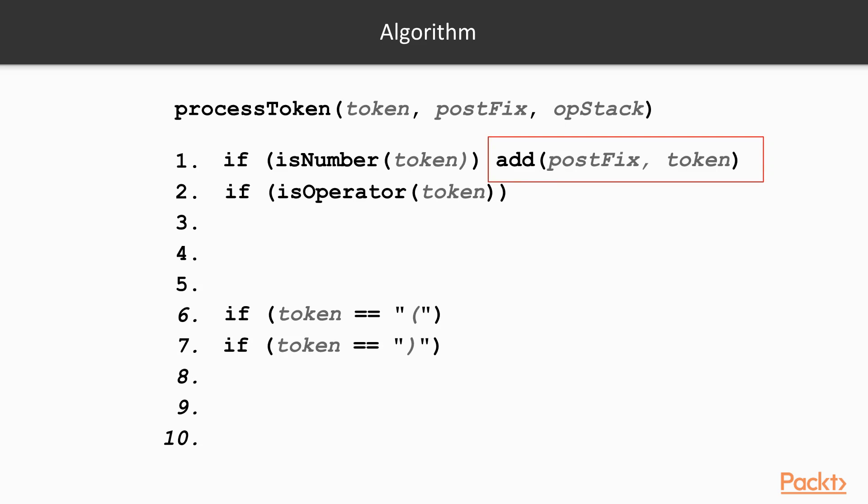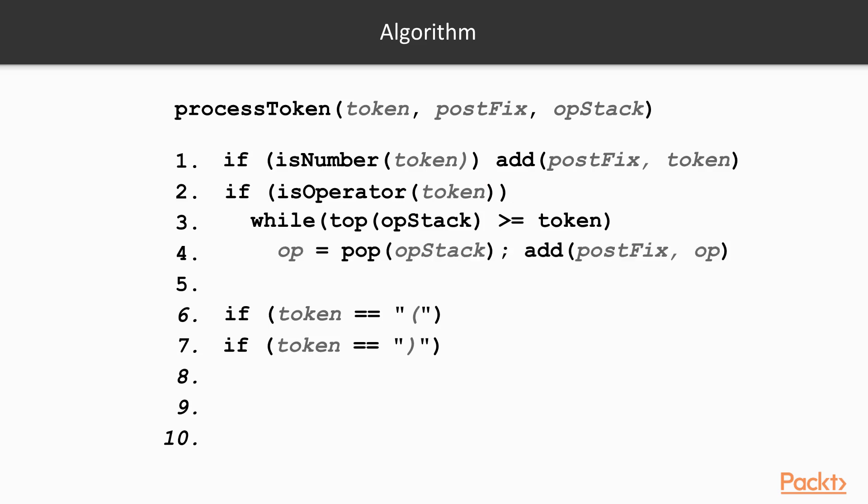If the token is an operator, we start a loop that loops while the top of the stack has an operator with a higher precedence than our token. Inside the loop, we keep on removing from the stack and placing it on our postfix list. Once we're done, we push our new operator on top of the stack.